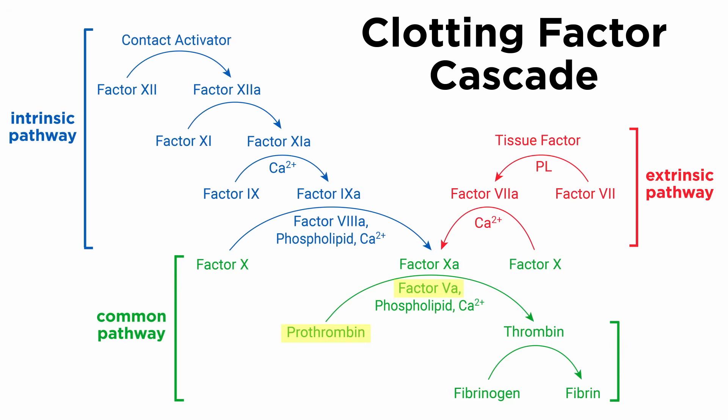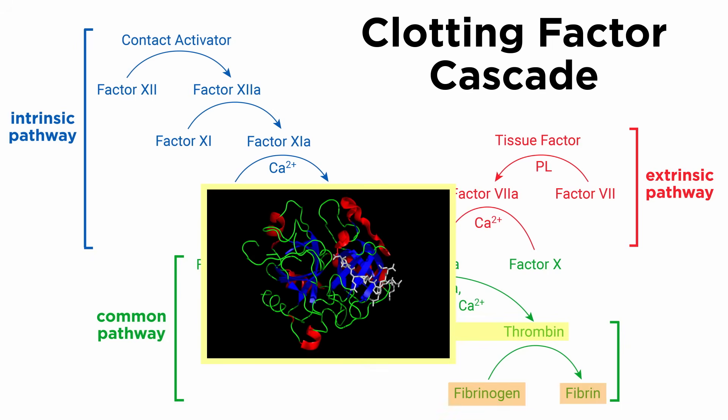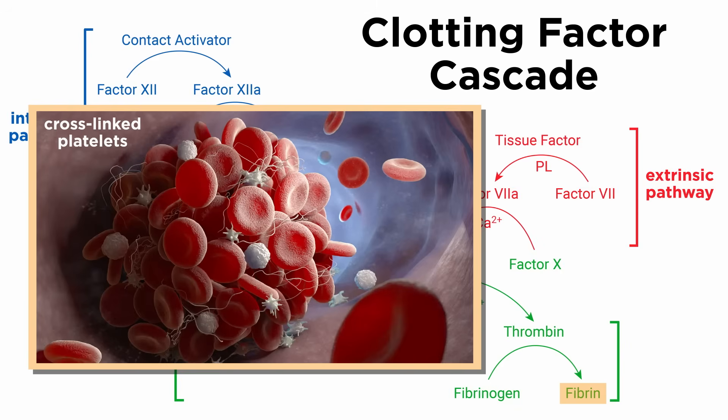This proteolysis is also increased by factor Va. For a fully optimized prothrombinase complex, both factor Xa and factor Va are required. Once thrombin is generated in the circulatory system from prothrombin, it will activate protease-activated receptors on platelets, which increase platelet aggregation, as we discussed in the previous tutorial. Thrombin also catalyzes the conversion of fibrinogen to its active form, fibrin, which initiates platelet-platelet cross-linking — critical in thrombus formation and stabilization.